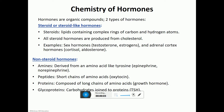Now for the chemistry of hormones. Hormones can either be steroids or non-steroid hormones. Steroid hormones are made out of cholesterol — they start off as a cholesterol molecule and then different enzymes will change that cholesterol into different hormones.